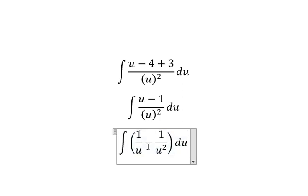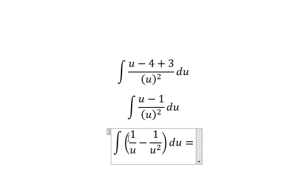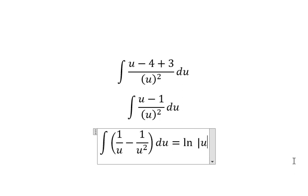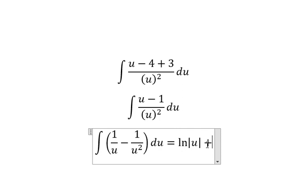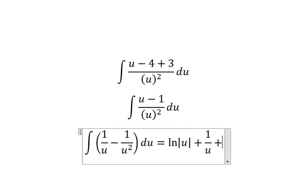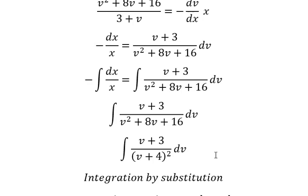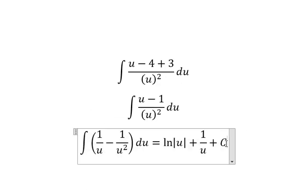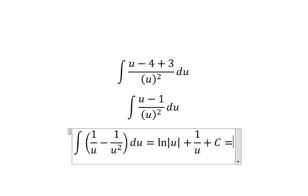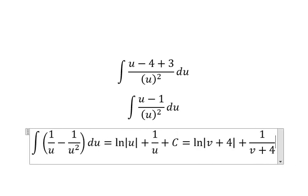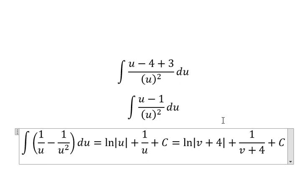We now have positive one. The integral of one over u gives us ln of the absolute value of u. The integral of this term gives us positive one over u. I will write u and add the constant C.